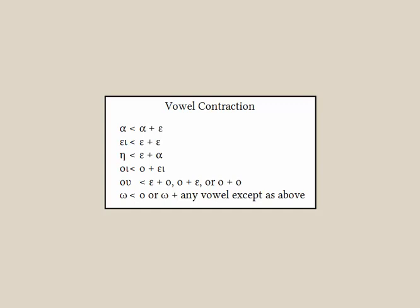This set of vowel contractions is one of the core patterns to learn. This list is arranged in the order in which you see signals in a text. So if you see an eta and suspect it represents a contraction, then you expect it to have come from epsilon plus alpha. The first item in the list means that when a stem ends in alpha and an epsilon is added, it remains in alpha, even though there's often a change in accent. Not all these forms of contraction occur in the 3rd declension, but we'll meet them in the verbal system as well.